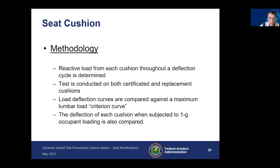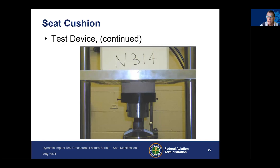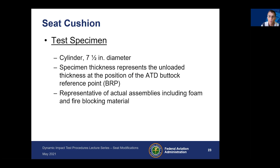You collect a load deflection curve and compare it against a maximum lumbar load criterion curve. You also compare the deflection of each cushion when subjected to a 1G occupant loading. The test device is a compression type device on a component of the seat cushion. It uses a circular component of seven and a half inches in diameter, and the thickness represents the unloaded thickness at the position of the ATD buttock reference point. The specimen is also representative of the actual assembly, including any foam and fire blocking material.